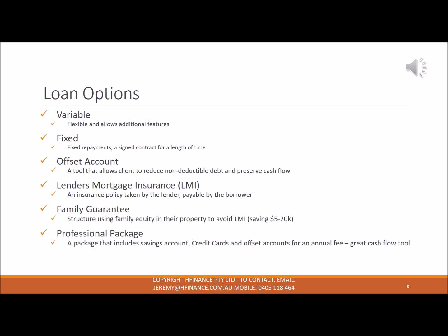Finally, talking about a professional package — called different things under different lenders, but it's basically a package with an annual fee of anywhere between $200 and $300 a year. It allows the client to take up a home loan, a fee-free credit card, transaction accounts, and offset accounts. These packages can also include additional discounts on other products the bank may offer. It's a great low one-cost product, and if someone needs to utilise all those features, I would definitely recommend paying the annual fee so you can avoid paying separately for a credit card and have all those benefits.